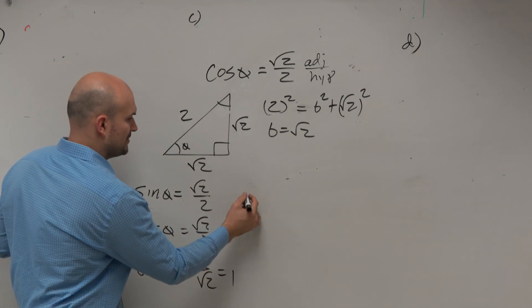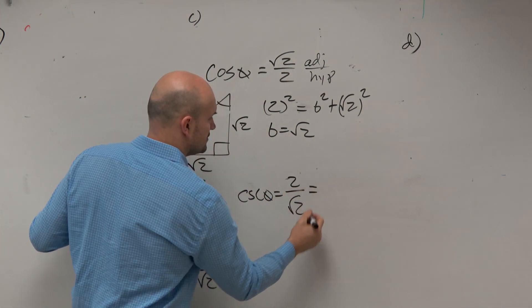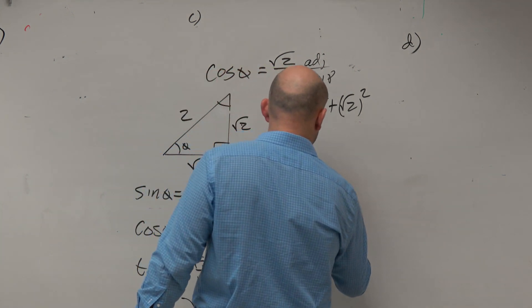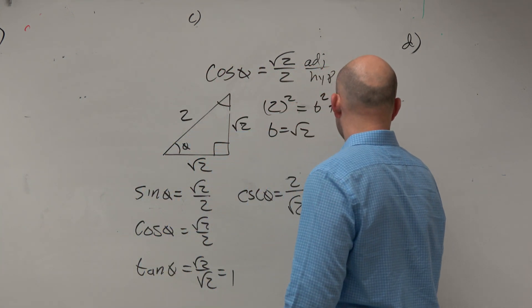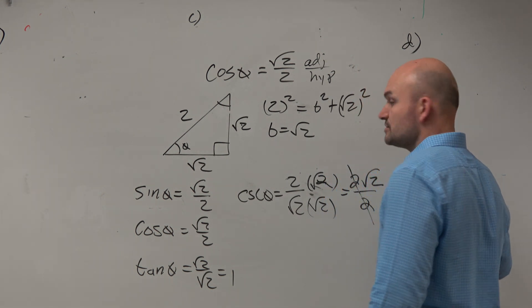Now, we just need to do the reciprocals. Cosine of theta is going to be 2 over the square root of 2. Rationalize the denominator. We do here equals 2 square root of 2 over 2, which equals to the square root of 2.